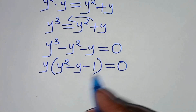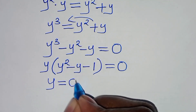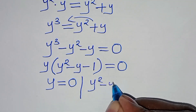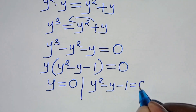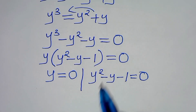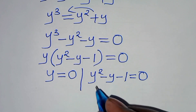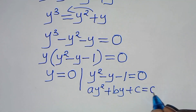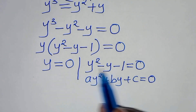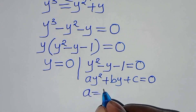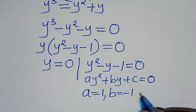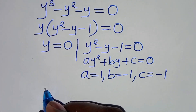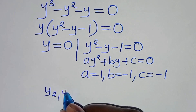So this implies that we have the first value y₁ equal to 0. And we have the second part, which is y squared minus y minus 1 equals 0. This is a quadratic equation of the form ay squared plus by plus c equals 0, where a equals 1, b equals minus 1, and c equals minus 1.